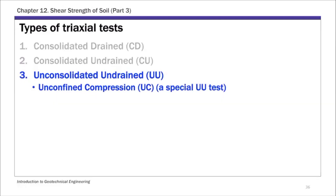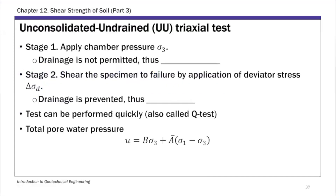An unconfined compression test is a special type of UU test. In the unconsolidated undrained triaxial test, stage one is where you apply the confining pressure we call chamber pressure σ3. In the unconsolidated undrained test, we keep the drainage closed — drainage is not permitted — thus this is unconsolidated. That's what the first letter refers to: an unconsolidated first stage.